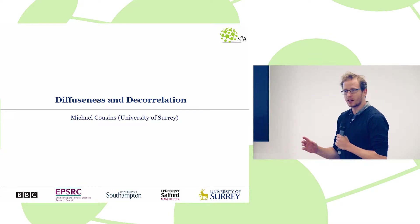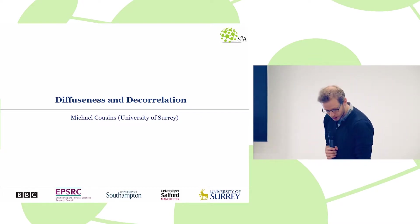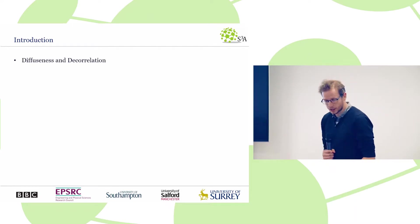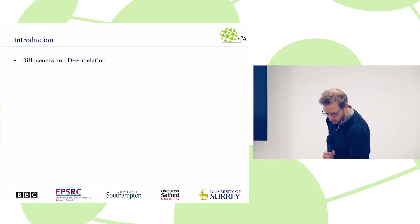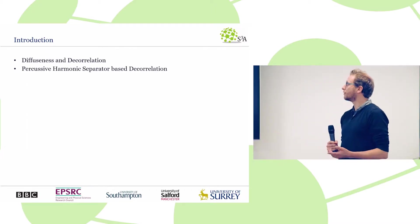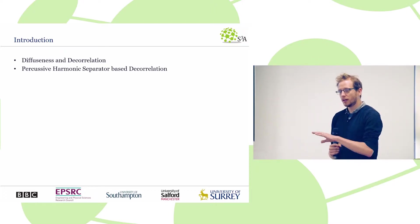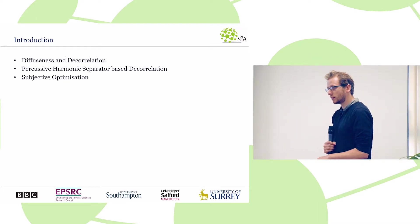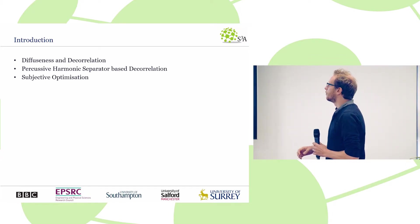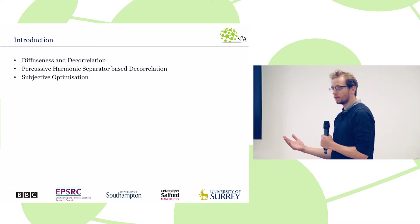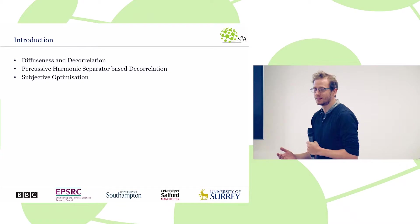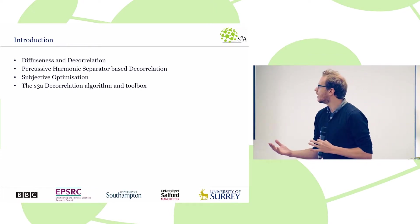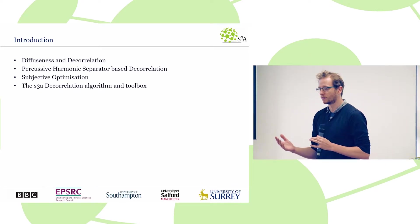I'm going to briefly go over my work over the last year on diffuseness and decorrelation. I'll begin by talking about what I mean by diffuseness and why we might need some decorrelation, as well as some of the problems we came across with traditional decorrelation algorithms. I'll then introduce the percussive harmonic separator based decorrelation algorithm we developed, the subjective optimisation that went into it, and finally the S3A decorrelation algorithm toolbox and where you can find it.